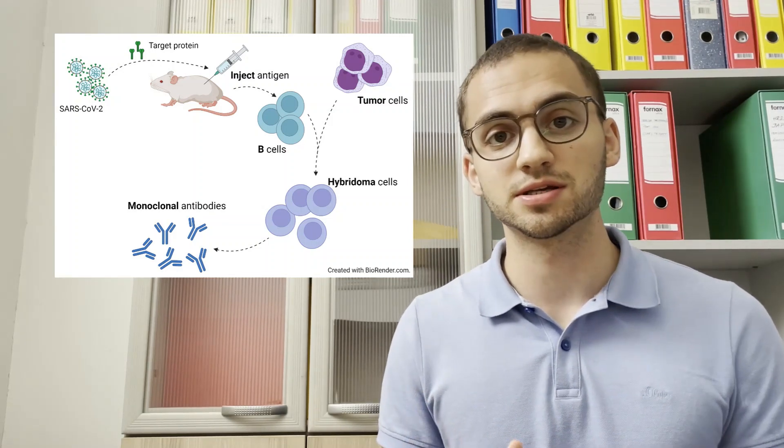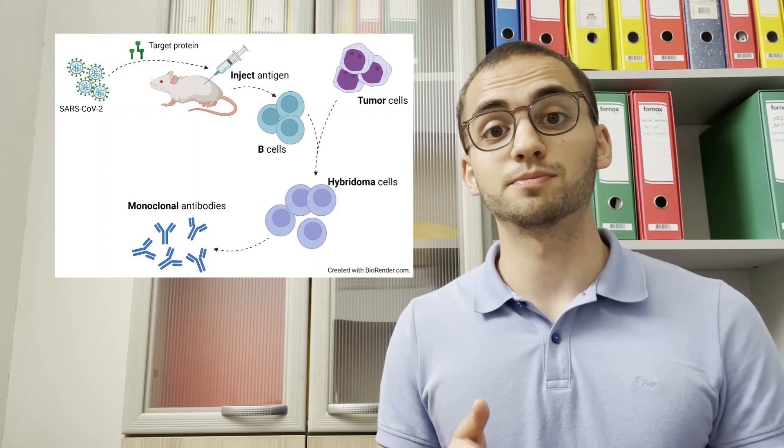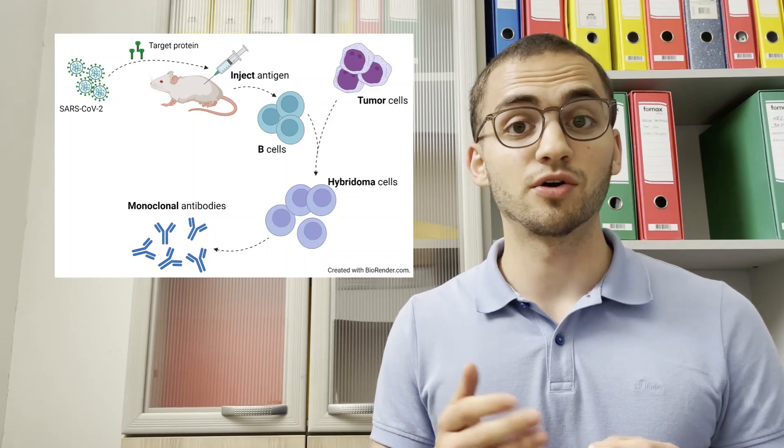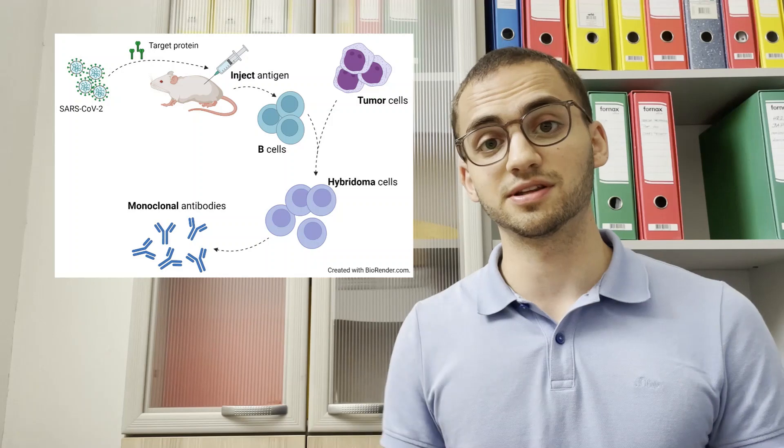B cells are then fused with myeloma tumor cells to form hybridomas, molecular factories that can produce monoclonal antibodies of high specificity for the target antigen and divide rapidly and indefinitely.